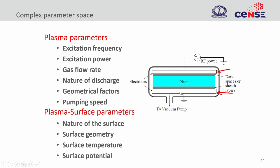There are various factors that determine the plasma: the frequency, the RF power, the gas flow, the nature of the discharge (whether it is electropositive or electronegative — normally electropositive), the gases present, the geometrical factors like chamber size, electrode size, and the asymmetry between electrodes. The electrodes need not be identical in size. The pumping speed of the vacuum pump also determines the flow and pressure. These are all factors associated with the plasma.